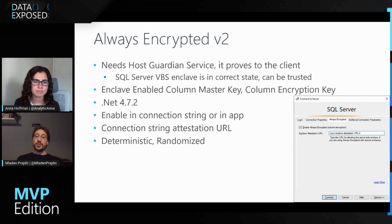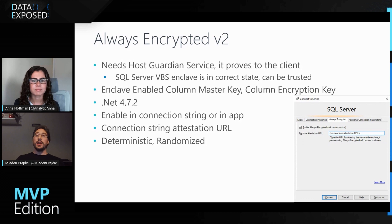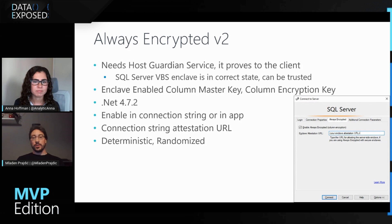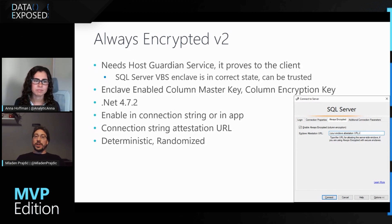You can enable Always Encrypted in the connection string or in the application itself via a property for the SQL command object. If you put something called an attestation URL in your connection string, version two of Always Encrypted will be used. If you don't put this URL, version one will be used. This attestation URL is the URL to your Host Guardian Service machine, so the client knows it has to contact that machine and make it prove that the SQL Server's VBS enclave is in the correct state.